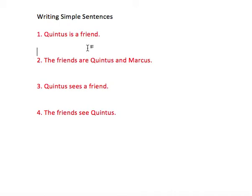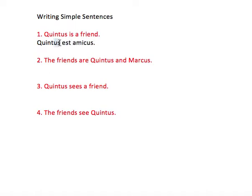The first sentence: Quintus is a friend. So we're going to say Quintus — we know he's a second declension noun, just like amicus and annulus. Is, very simply, just the verb est, and then a friend. So we have amicus here. The reason that it's amicus is that est isn't an action verb, so it doesn't need a direct object. The basic idea here is almost like an equal sign: Quintus equals a friend. And so both Quintus and amicus need to be in the nominative.